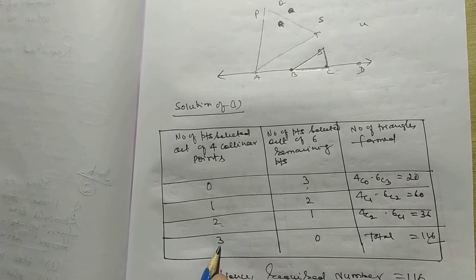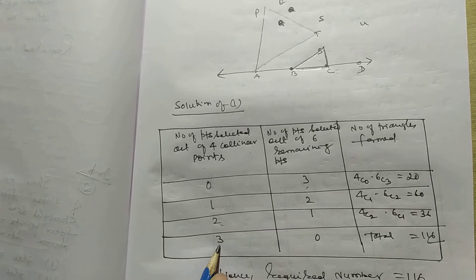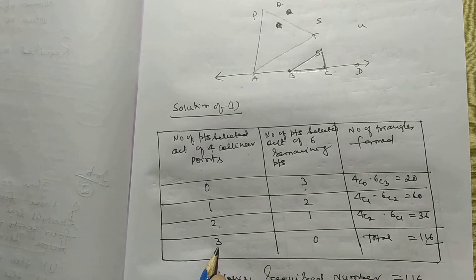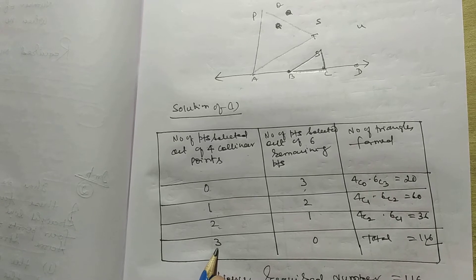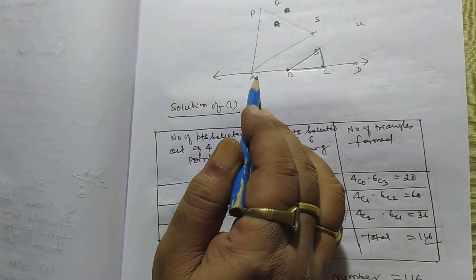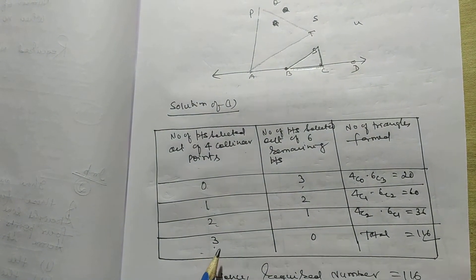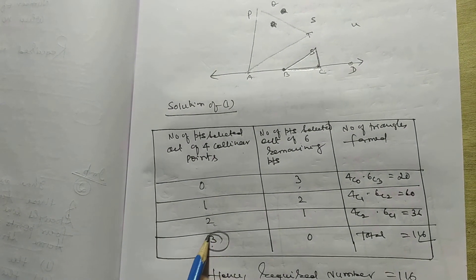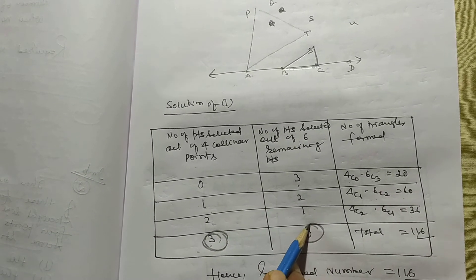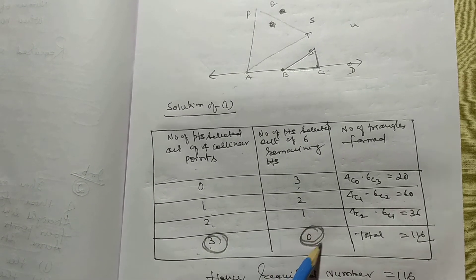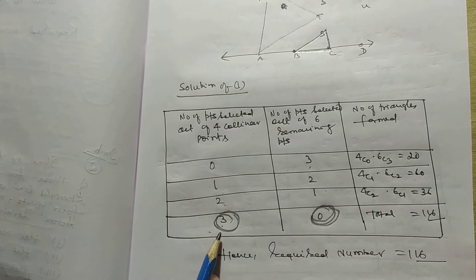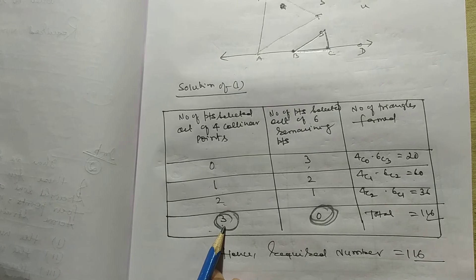We cannot take all 3 points from the 4 collinear points because 3 collinear points joined together will not form a triangle. Similarly, taking 3 collinear and 0 non-collinear will not form a triangle. So this case is excluded.